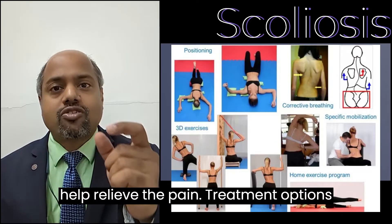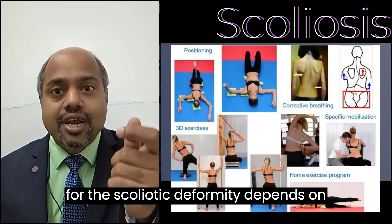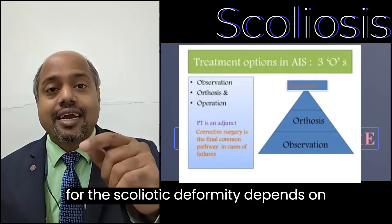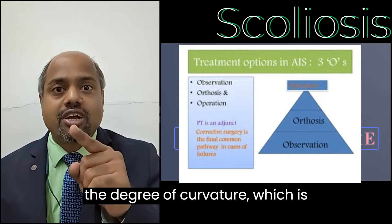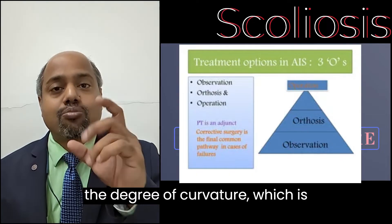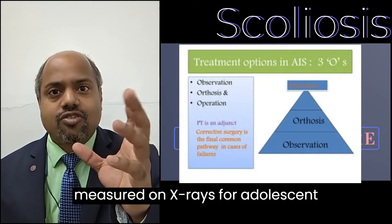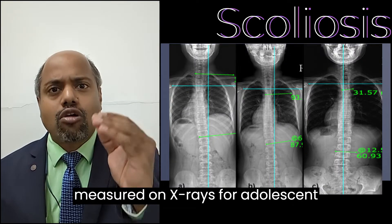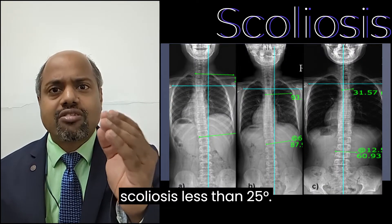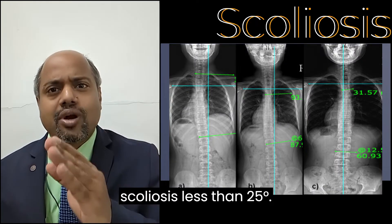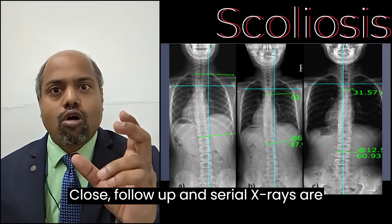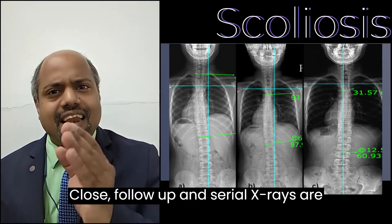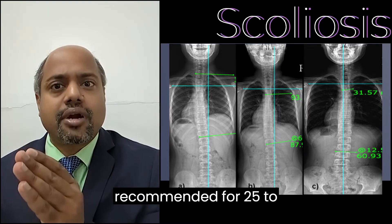Treatment options for the scoliotic deformity depend on the degree of curvature, which is measured on x-rays. For adolescent scoliosis less than 25 degrees, close follow-up and serial x-rays are recommended.